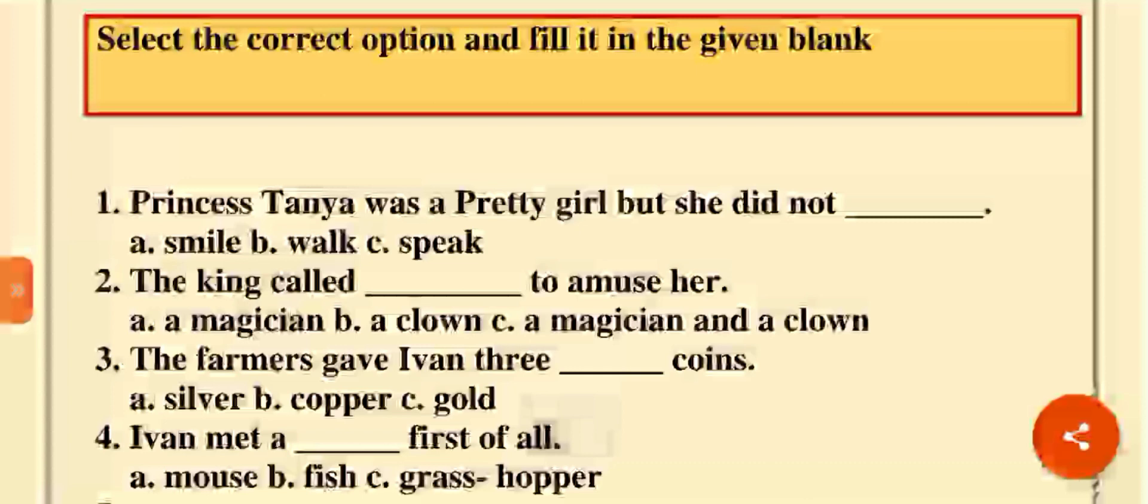Third question. The farmer gave Ivan three dash coins. Farmer nhe Ivan mho kede coins dittne si? Chandi dhe, tambe dhe, chaan phir sonne dhe. Kede dittne si? Gold coins. Very good.